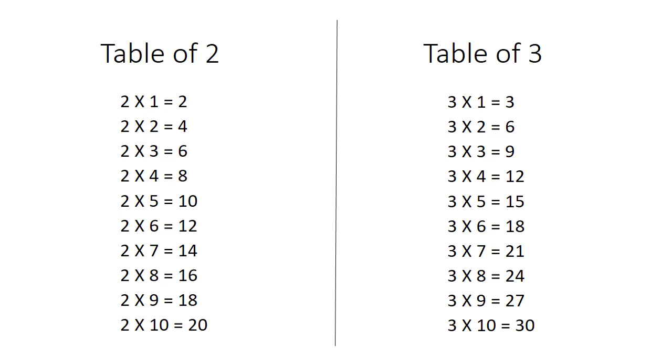Once more, table of 2. 2 ones are 2, 2 twos are 4, 2 threes are 6, 2 fours are 8, 2 fives are 10, 2 sixes are 12, 2 sevens are 14, 2 eights are 16, 2 nines are 18, 2 tens are 20.